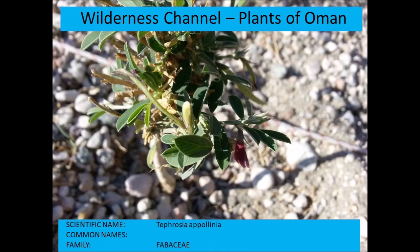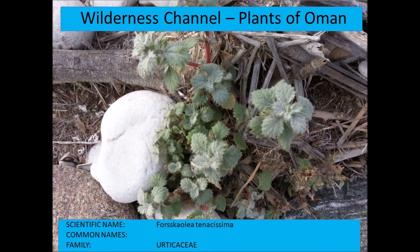Tephrosia apollinea. Forsskaolea tenacissima — very characteristic woolly leaves and red stems — a typical weed-like plant.